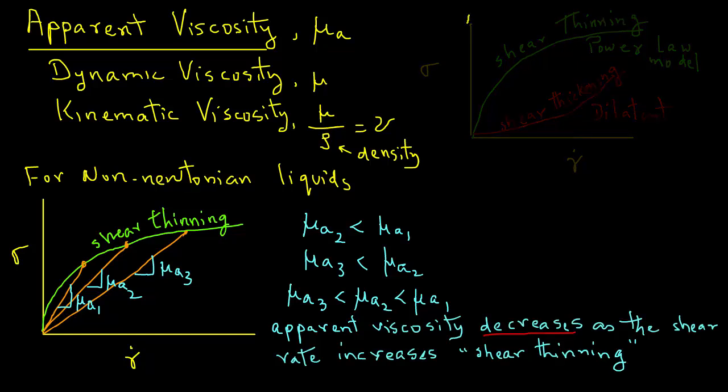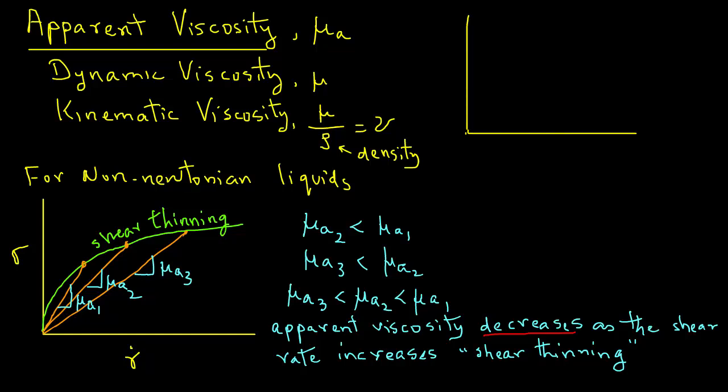We can plot apparent viscosity versus shear rate, and the plot will look something like this. The apparent viscosity will be high at low shear rates, then it decreases and reaches some asymptotic value. The shear stress-shear rate curve shows an asymptotic value at high shear rates.